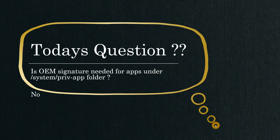Today's question is: is OEM signature needed for apps under the system priv-app folder? OEM stands for original equipment manufacturer. Whatever apps we place inside the priv-app folder do not need special OEM signing — the Android system will grant the required permissions to all of them by default. So the answer is no.